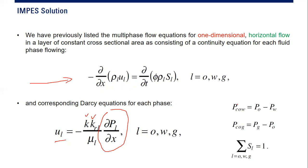For the oil-gas system, gas is not the wetting phase — so if gas meets oil, gas will be the non-wetting phase. Therefore, capillary pressure for the oil-gas system is gas pressure minus oil pressure. We also know that the total saturation — oil saturation plus gas saturation plus water saturation — equals unity.